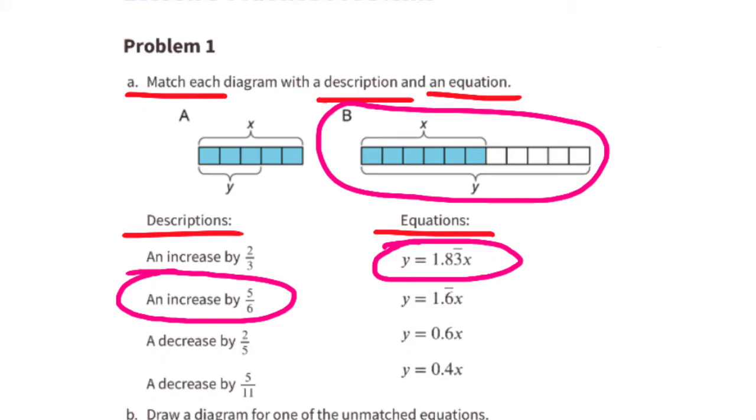And y equals 1.83 repeating times x, that's because y is eleven-sixths in length. Eleven divided by six is 1.83 repeating. You can also look at it as the length of x is the blue six-sixths plus an additional five-sixths. Since five-sixths has the value of 0.83 repeating, then the decimal for the entire length of y is 1.83 repeating. That's why we can write the equation y equals 1.83 repeating times x.